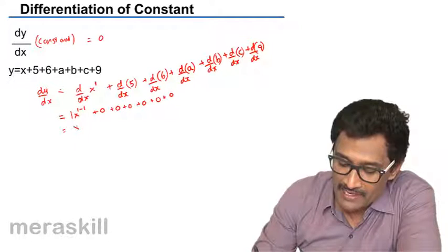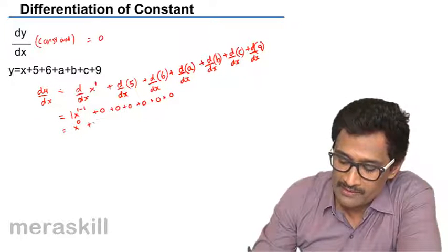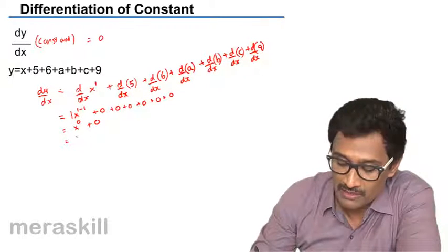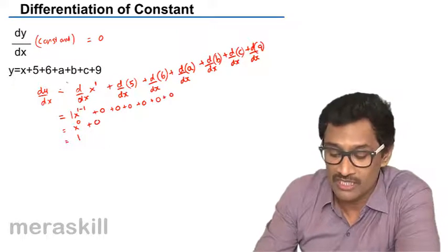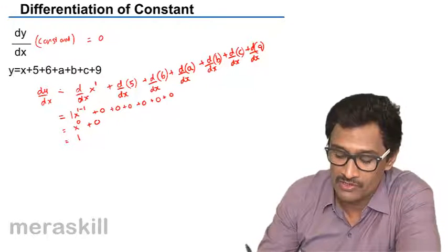This is nothing but x raised to 0 plus 0. Now x raised to 0 is nothing but 1, so the derivative of this entire function is nothing but 1.